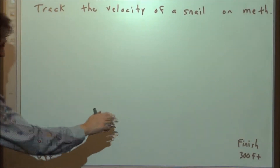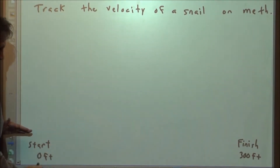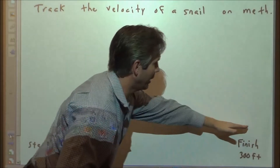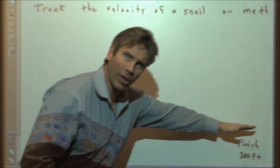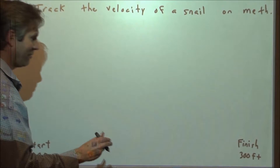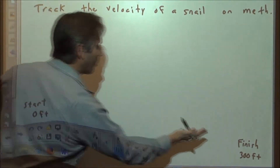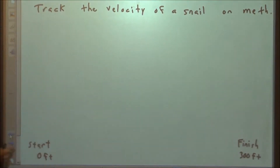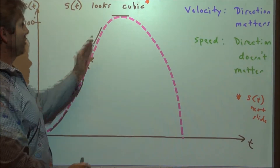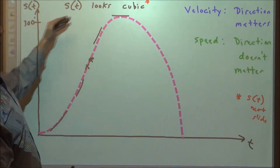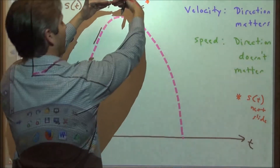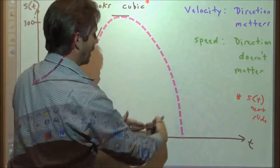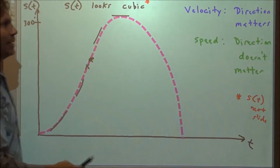Velocity direction matters. When we're going towards the 300-foot mark, our velocity is positive. But once we reach the object and start coming back to the starting point, that is negative velocity. With velocity, direction matters — positive velocity means we're going towards the 300-foot mark; negative velocity means we're coming back. The tangent lines are positive going forward until the max point where the slope is zero, then all tangents are negative.